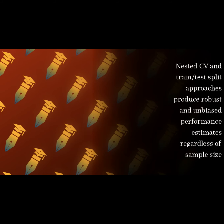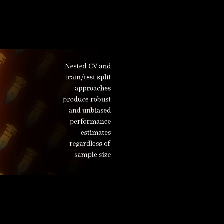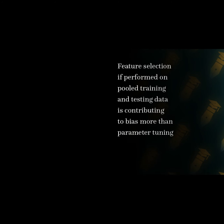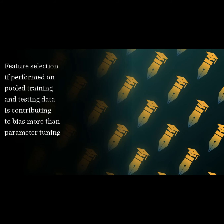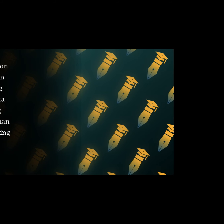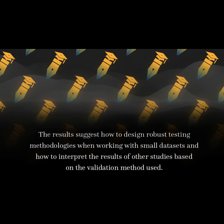Nested CV and train/test split approaches produce robust and unbiased performance estimates regardless of sample size. Feature selection, if performed on pooled training and testing data, contributes to bias more than parameter tuning. The results suggest how to design robust testing methodologies when working with small datasets and how to interpret the results of other studies based on the validation method used.